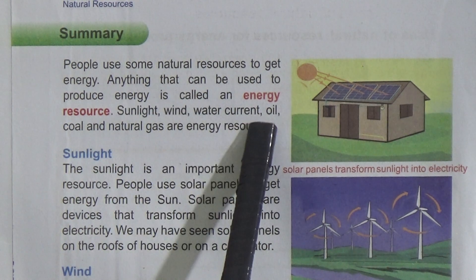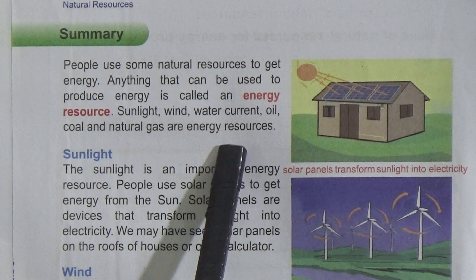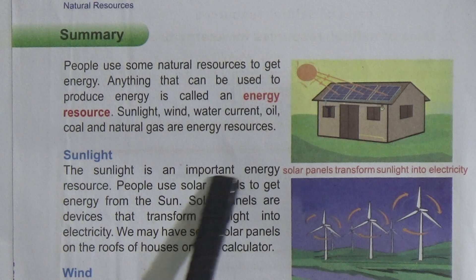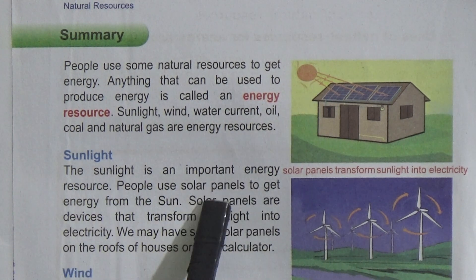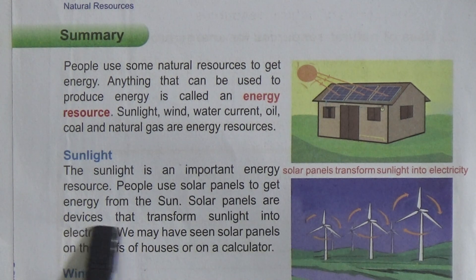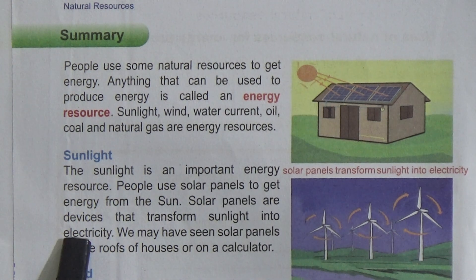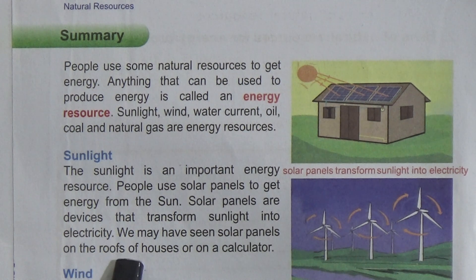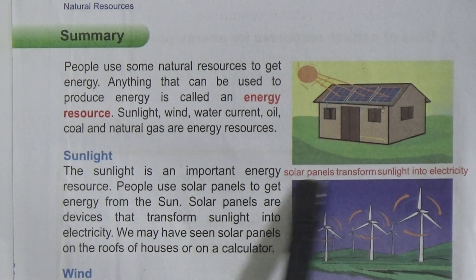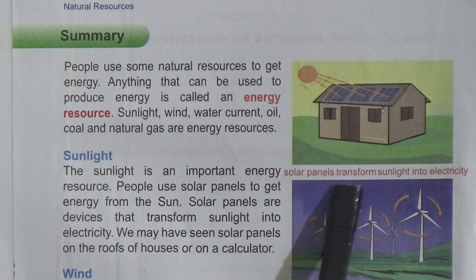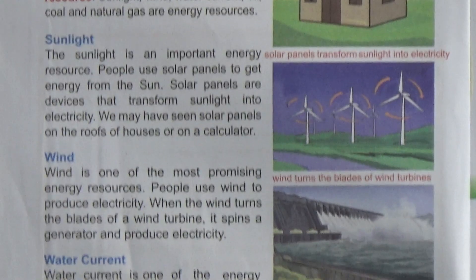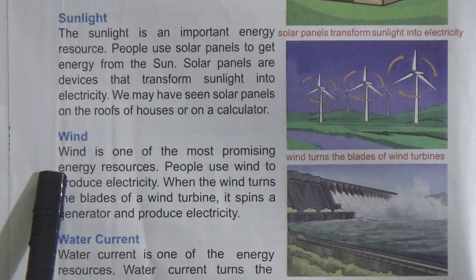Sunlight, wind, water current, oil, coal, and natural gas are energy resources. Sunlight is an important energy resource. People use solar panels to get energy from the sun. Solar panels are devices that transform sunlight into electricity. We may have seen solar panels on the roofs of houses or on our calculators. Look at here — this picture shows solar panels transforming sunlight into electricity.